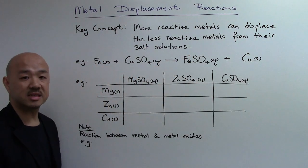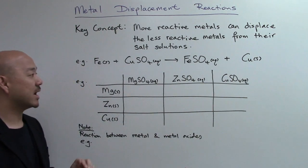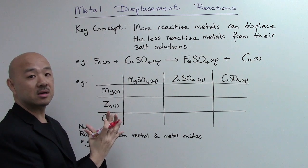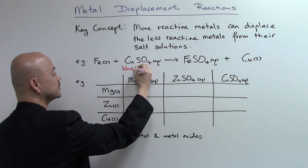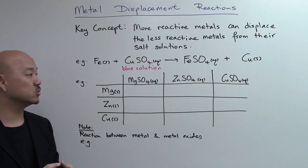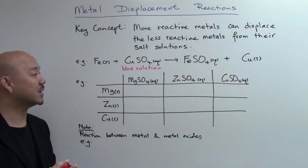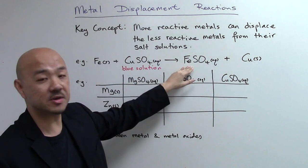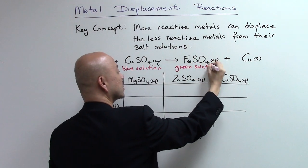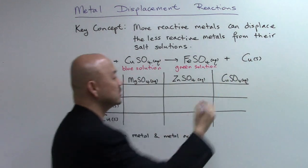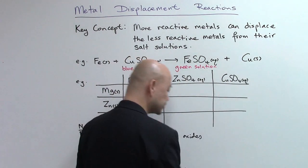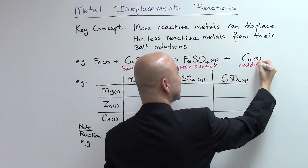So this is the metal displacement reaction equation. In terms of observation, this is what you're going to see. Initially, you start with a beaker of copper sulfate — it's a blue solution. Once you add iron into copper sulfate, it will displace the copper out of the copper ions, and then you get iron(II) sulfate solution, which exists as a green solution, and the copper metal that has been displaced out you normally see as a reddish-brown solid.